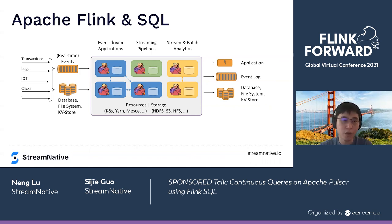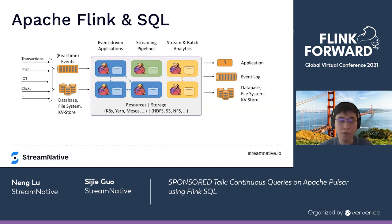Flink can fetch data from different types of sources like real-time storage, databases, file systems, or KV stores. Once data is fed into the Flink job, Flink handles the processing logic and generates results to different destinations. For the Flink API, they offer DataStream APIs, Table APIs, and even simplified SQL APIs — all available for users to compose different Flink jobs based on their needs.